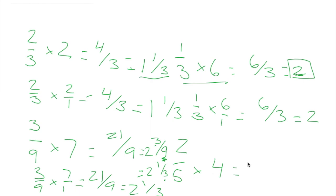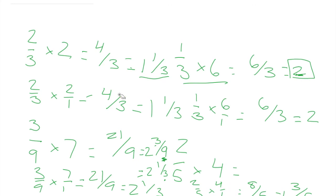Two-fifths times four. Let's do the clearer way first: two-fifths times four over one. Two times four equals eight, and five times one equals five — eight-fifths — simplify to one and three-fifths. Make sure you write it as four over one, not four-fourths, because that would be a different fraction entirely. Our answer is one and three-fifths.